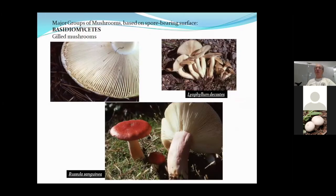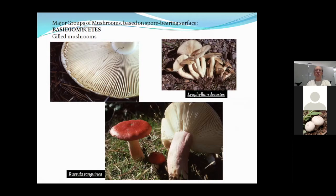Sticking with Basidiomycetes, which include the gilled mushrooms — the first thing to figure out is what the spore-bearing surface looks like. In mushrooms, the spore-bearing surface consists of flat plate-like structures underneath the cap called gills. Each of those structures has millions of tiny basidia cells, each making four spores. Gilled mushrooms make up the majority of what you'll find, but sometimes the spore-bearing surface has a different structure.